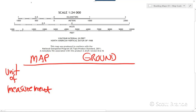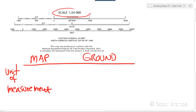What is the fractional scale of a map and how do we use it to measure the distance between two points on the ground? Here's an example of a fractional scale written on a U.S. Geological Survey map. We say it in the following way: 1 to 24,000.